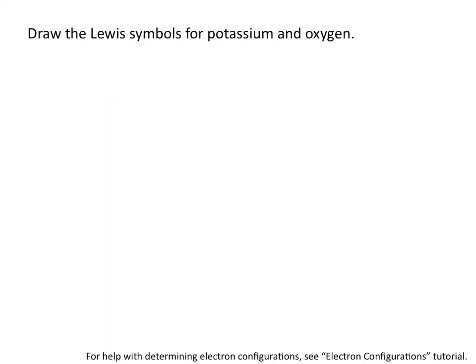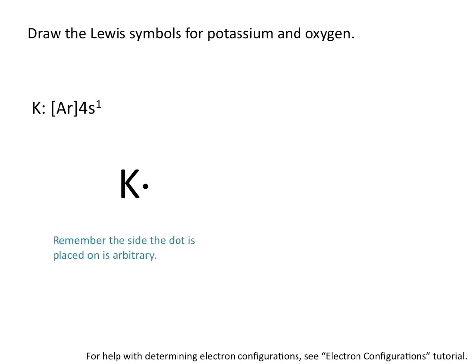Let's draw the Lewis symbols for potassium and oxygen. Potassium has 1 valence electron because it's in group 1. You can place the valence electron on any side of potassium because all of the sides are equivalent. Oxygen has 6 valence electrons, and it is in group 6 on the periodic table. Remember to place the electrons individually on each side before pairing them up.